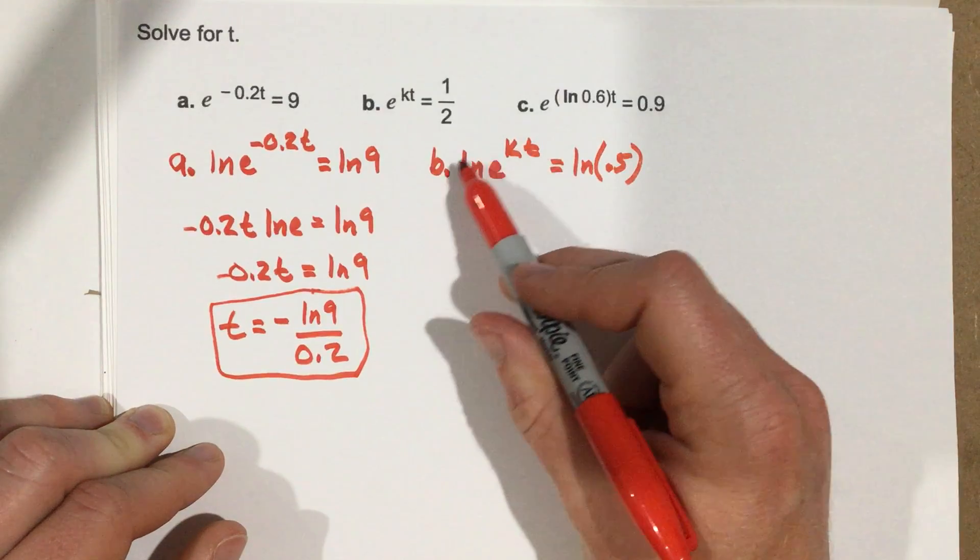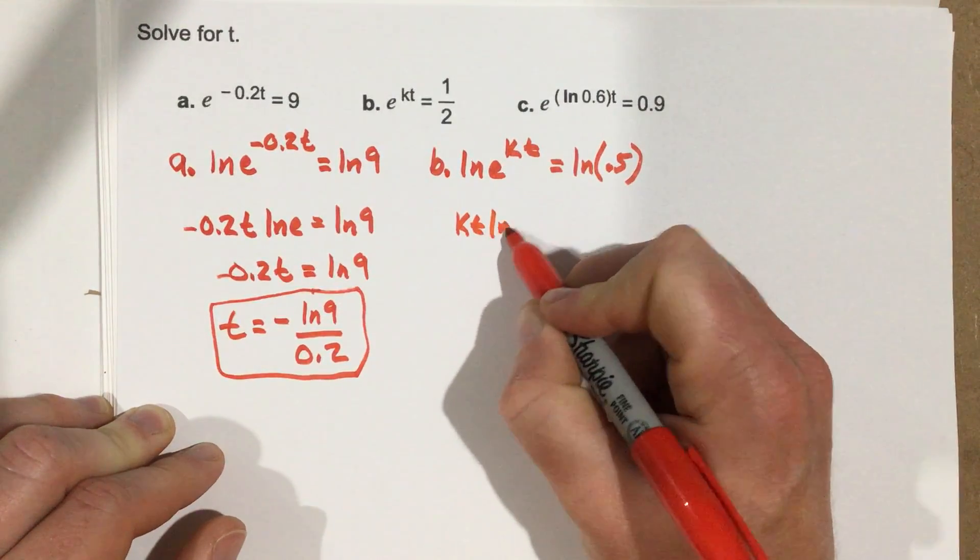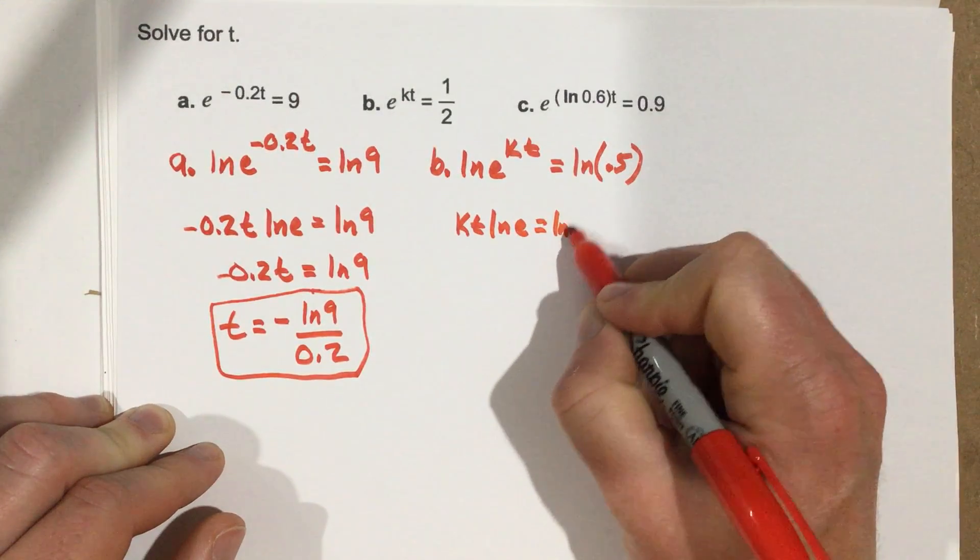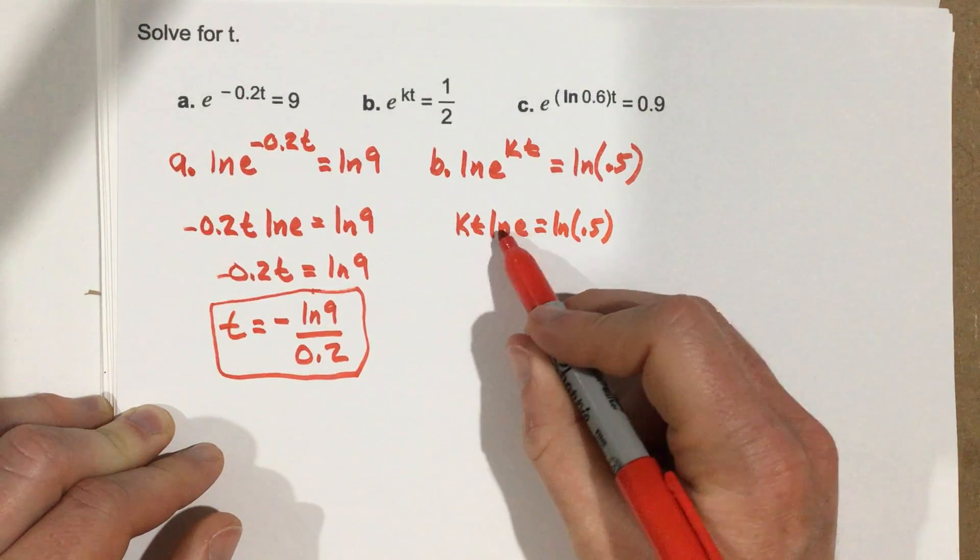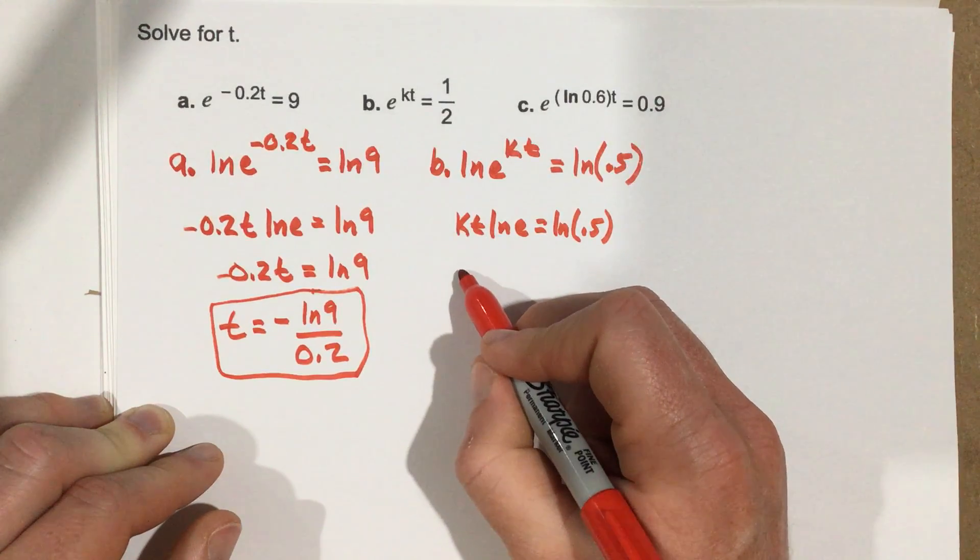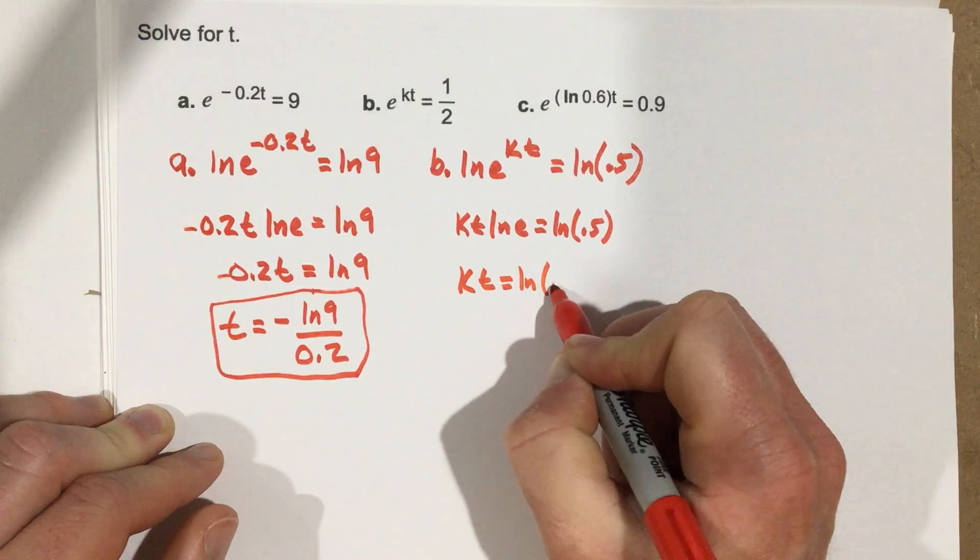I'm going to again bring the exponent to the front, so that's kt natural log e equals natural log of 0.5. This natural log e cancels just like it did in the first part, and we end up with kt equals natural log of 0.5.